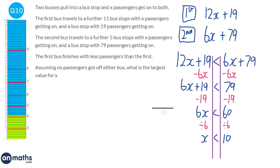It says what is the largest value for X. It is tempting to write 10 but X has to be less than 10, so the biggest whole number that is less than 10 is 9.